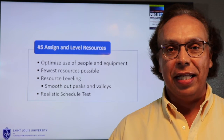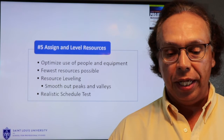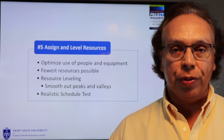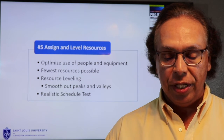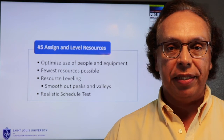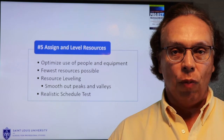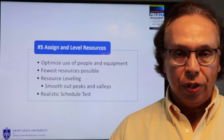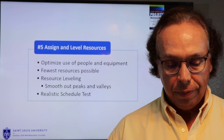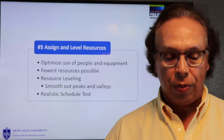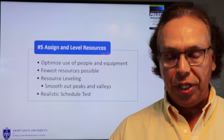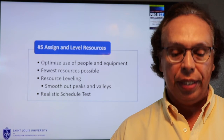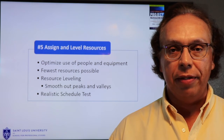Step five is to assign and level resources. You want to optimize the use of people and equipment, using the fewest resources possible to keep costs low. Project managers use a process called resource leveling — we start with an initial schedule and smooth out the peaks and valleys to make sure nobody's working more than 40 hours a week. We also want to do a realistic schedule test, which we call the sniff test. You can do this by doing schedule reviews with experts or your team, and then baseline the schedule with your project sponsor. Make sure resources know when they are needed and when they will roll off the project. The same goes for equipment and supplies — try to get them on site in advance if you can.